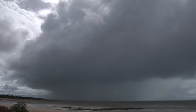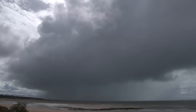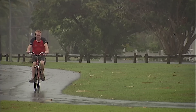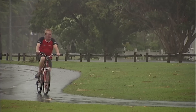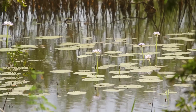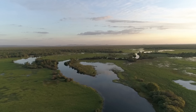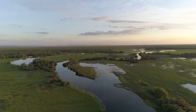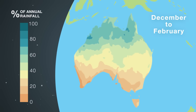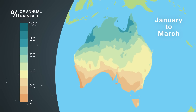The cooling, refreshing rains of the monsoon provide a welcome change from the build-up and herald the annual transformation from a dry brown landscape to a lush watery oasis. It's these monsoonal rains that deliver the vast majority of the annual rainfall across most of tropical northern Australia.